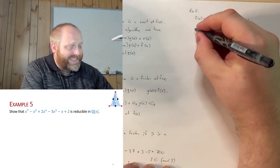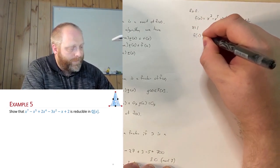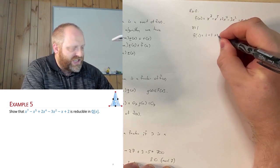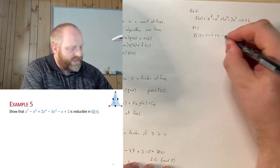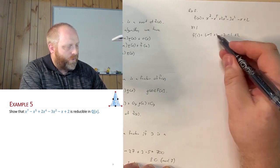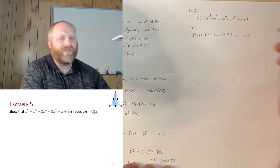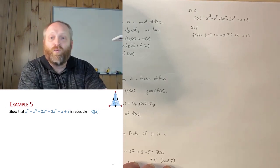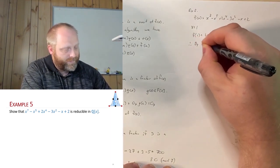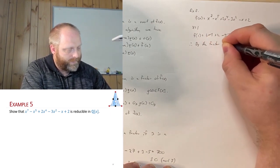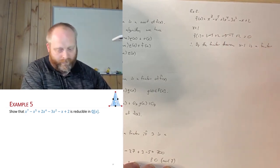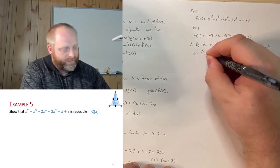Substituting x = 1 into f(x): 1⁷ minus 1⁵ plus 2·1⁴ minus 3·1² minus 1 plus 2. That gives 1 minus 1 plus 2 minus 3 minus 1 plus 2. The 1 and -1 cancel, and -3 and -1 plus 2·2 gives a net of zero. So f(1) = 0, meaning 1 is a root in ℚ. Thus by the factor theorem, x minus 1 is a factor, and f(x) is reducible.